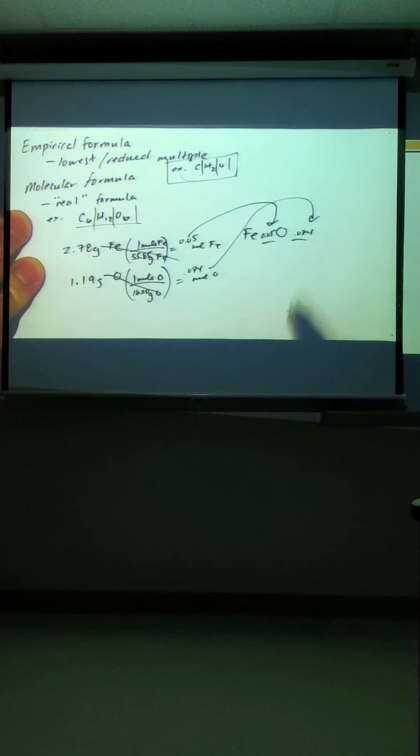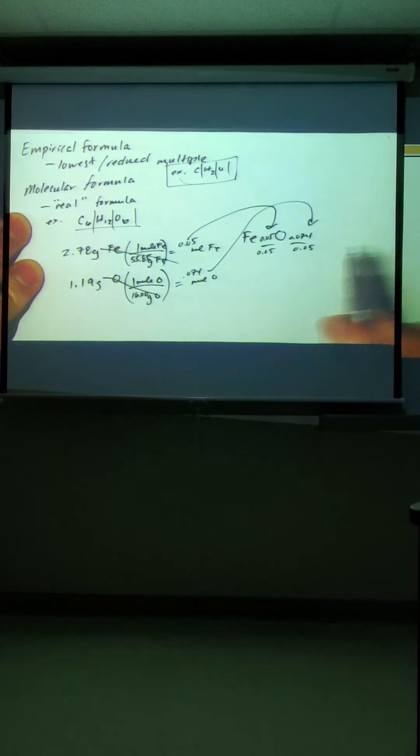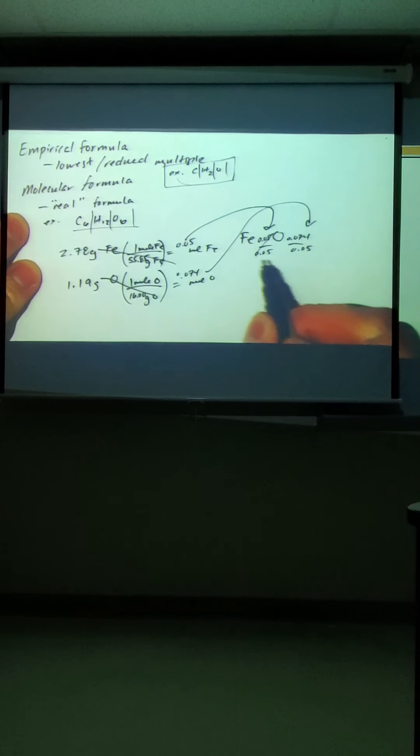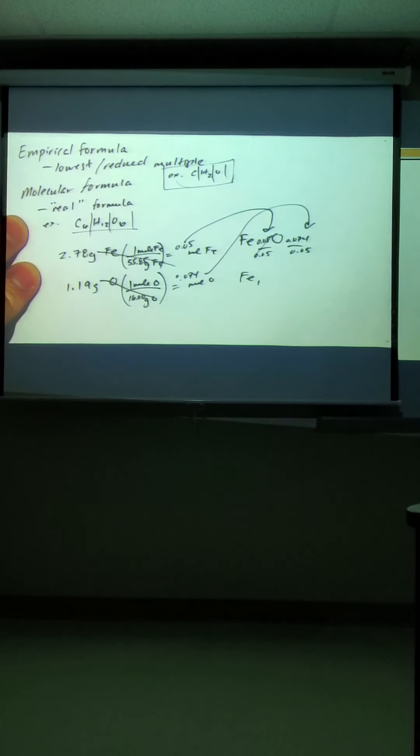So here's moles. We need a mole ratio. We're going to take the smaller one of the two, which is 0.05, and divide it by both. That'll give us a ratio of each. So this will just reduce to be 1. So that's good.